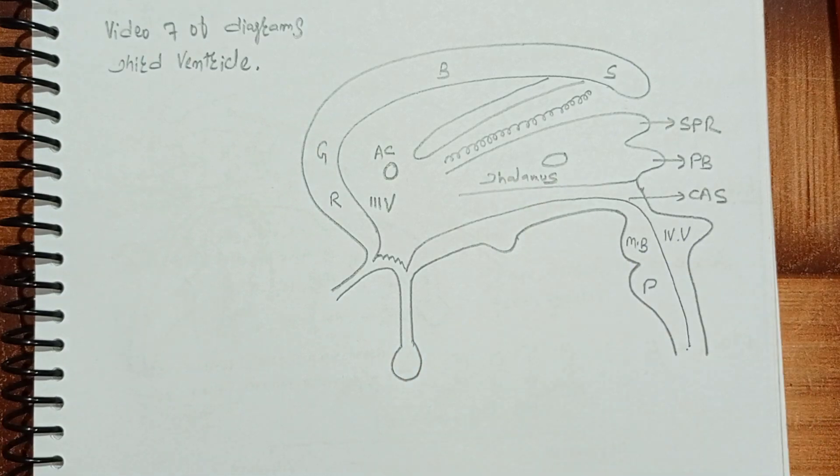This structure right here is the third ventricle. The third ventricle communicates with the fourth ventricle via a canal called the cerebral aqueduct of Sylvius. This part right here is the thalamus.